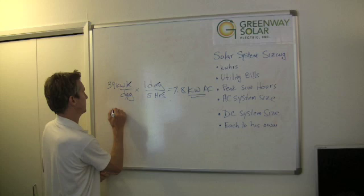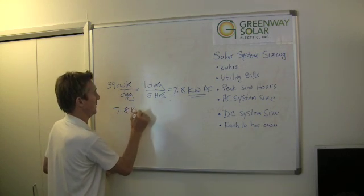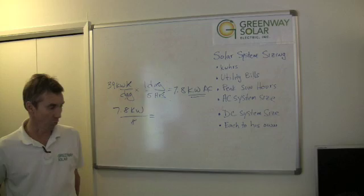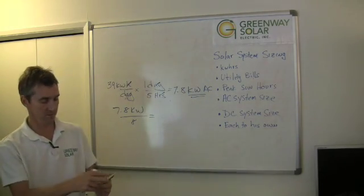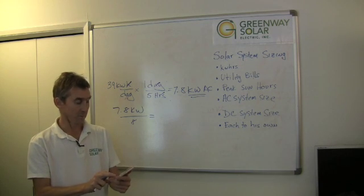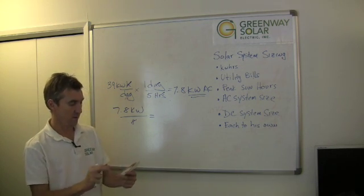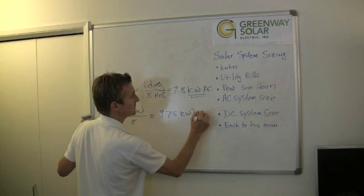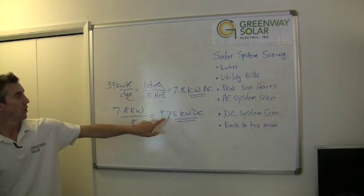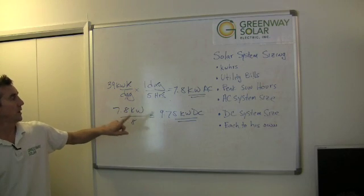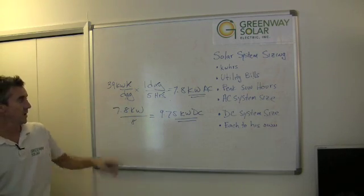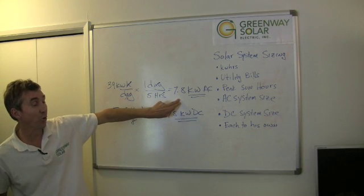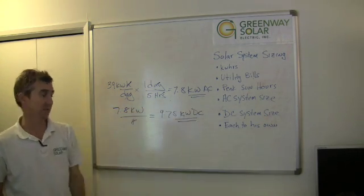So we're going to do this. We're going to do 7.8 kilowatt and we're just going to divide by 0.8. That's going to give us about 20% more. So if I do that, 7.8 divided by 0.8, so that gives us a 9.75 kilowatt DC system. So in order to produce 39 kilowatt hours a day, we would actually need a 9.75 kilowatt DC system, which is more or less equivalent to a 7.8 kilowatt AC system.